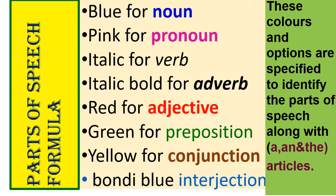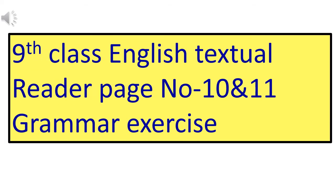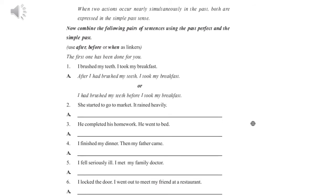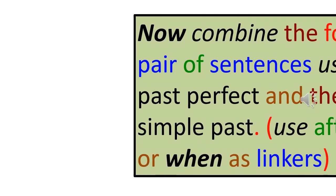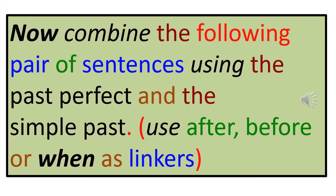These colors and formatting options are specified to identify the parts of speech, along with articles. Now, from the 9th Class English Textbook, page 10, Grammar Exercise: combine the following pairs of sentences using the Past Perfect and the Simple Past, with linkers — After, Before, or When.